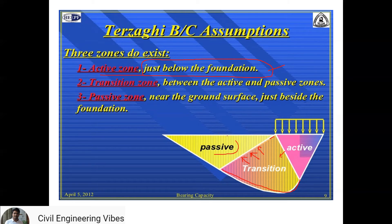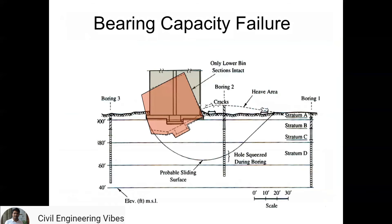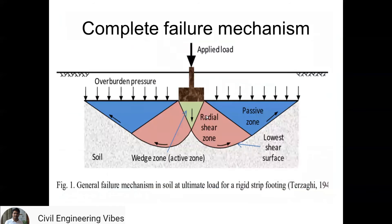Zone 3 is called the passive zone, formed near the ground surface just beside the foundation. It is called the passive zone because zone 2 pushes the soil towards the fill. In general, the active zone below the footing — familiarly called the triangular wedge — pushes the soil laterally and upward, which is also called radial shear. The passive zone's self-weight tries to restrict the soil movement from the radial shear. This passive zone is also called Rankine's passive zone.